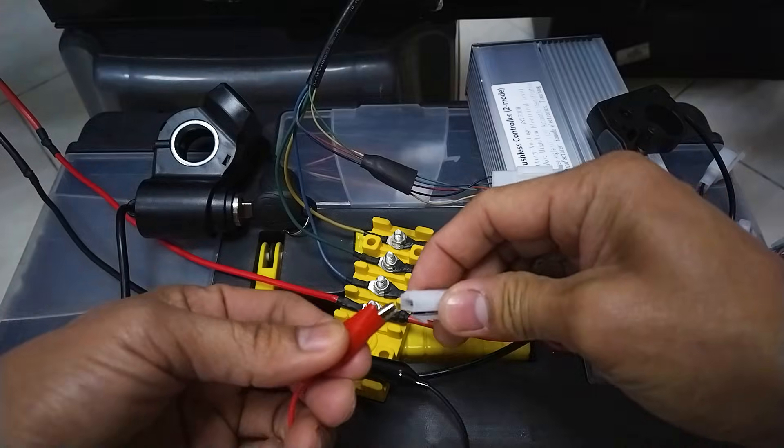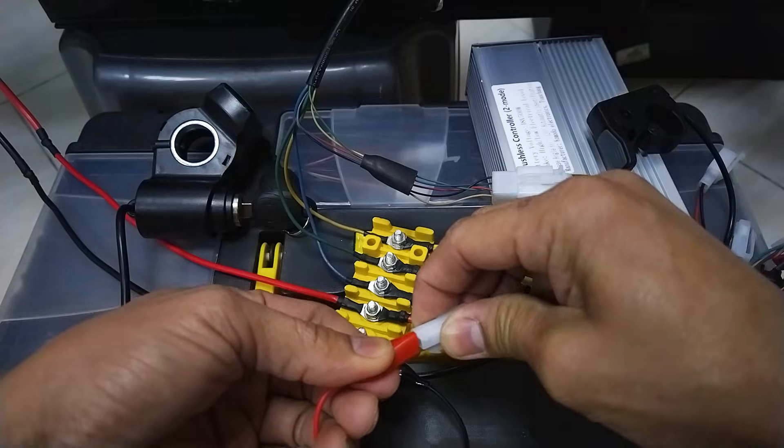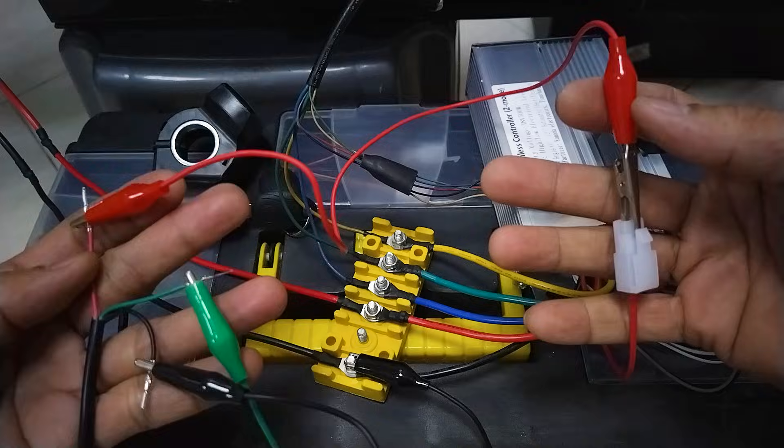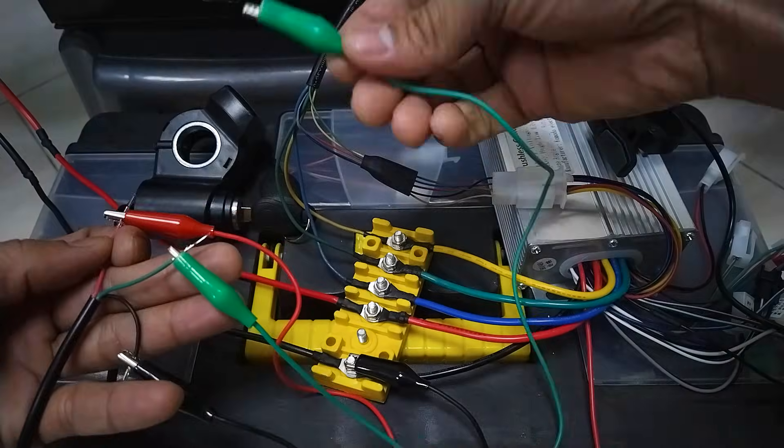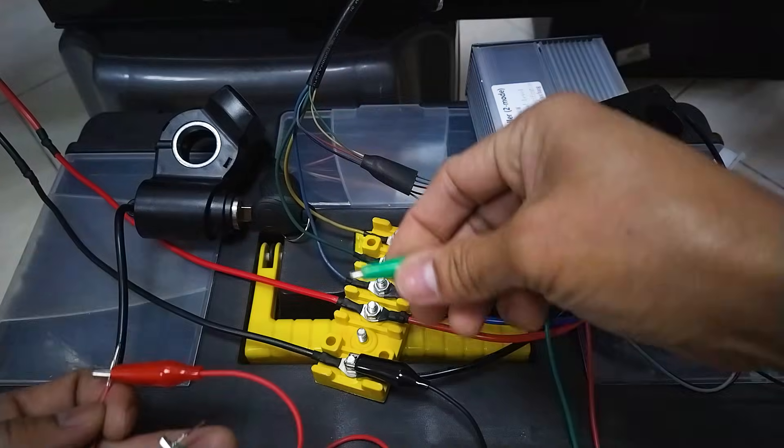So keep that in mind that the red wire of the key ignition switch is for the lock wire or switch wire of the controller. And the green wire of the key ignition switch is for the positive red wire line of the battery connected to the positive terminal of the controller.